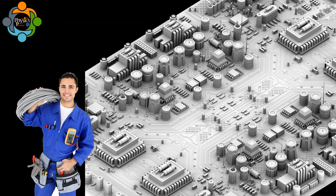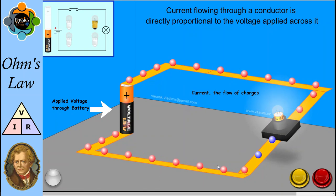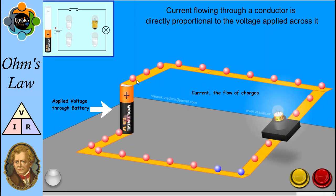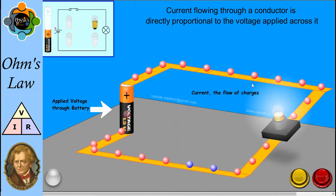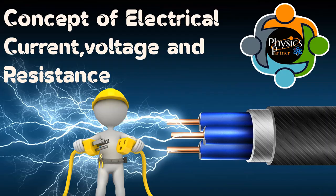It states that the current flowing through a conductor is directly proportional to the voltage applied across it. If you want to revise the concept of current and voltage, you can watch my video. I will share the link in the description.